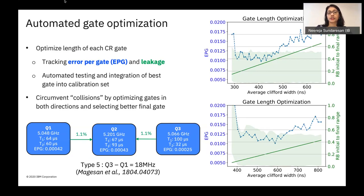On the right, I've included two examples of such gate length sweeps, where you can see that for these two pairs the optimal gate fidelity — tracked as error per gate in the dash-dotted line — and leakage, represented by the shaded green, occur at different gate lengths. I've also included as the solid green line, just as a guide to the eye, the estimated coherence limit.